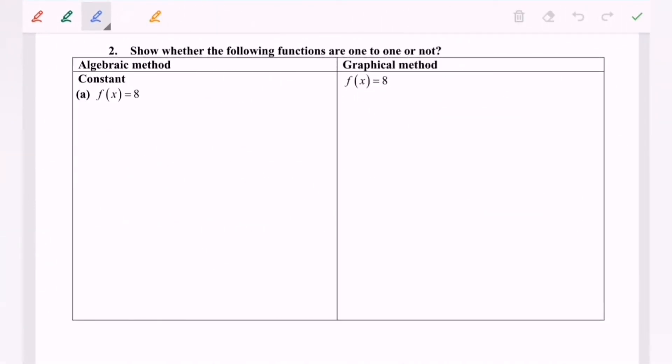Here are the examples, show whether the following functions are one-to-one or not. So given the first situation is a constant, for question a, given the function f(x) equals eight, so in order to show whether the function is one-to-one or not, f(x₁) equals f(x₂).